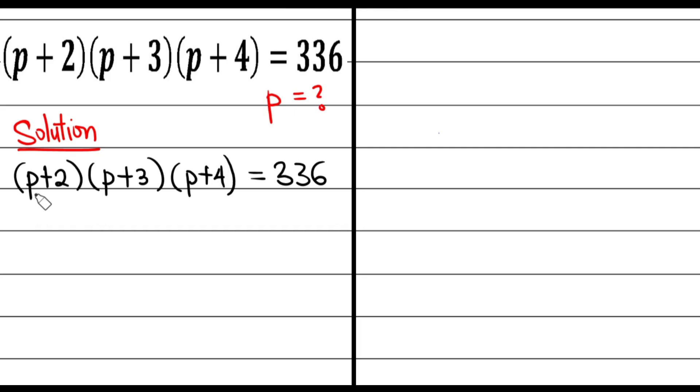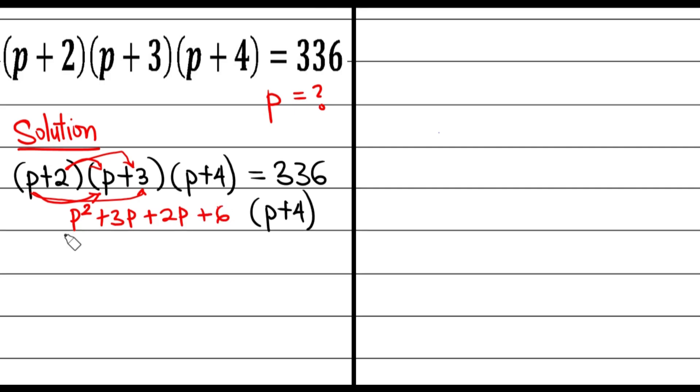If you go by the way most people are doing it, if you say p multiplied by p, that's p squared, then p multiplied by 3, that is plus 3p. Of course, 2 is going to multiply by p, that's plus 2p, then 2 multiplied by 3, that is plus 6. This is going to be multiplied by p plus 4 in parentheses. This is going to consume a lot of your time.